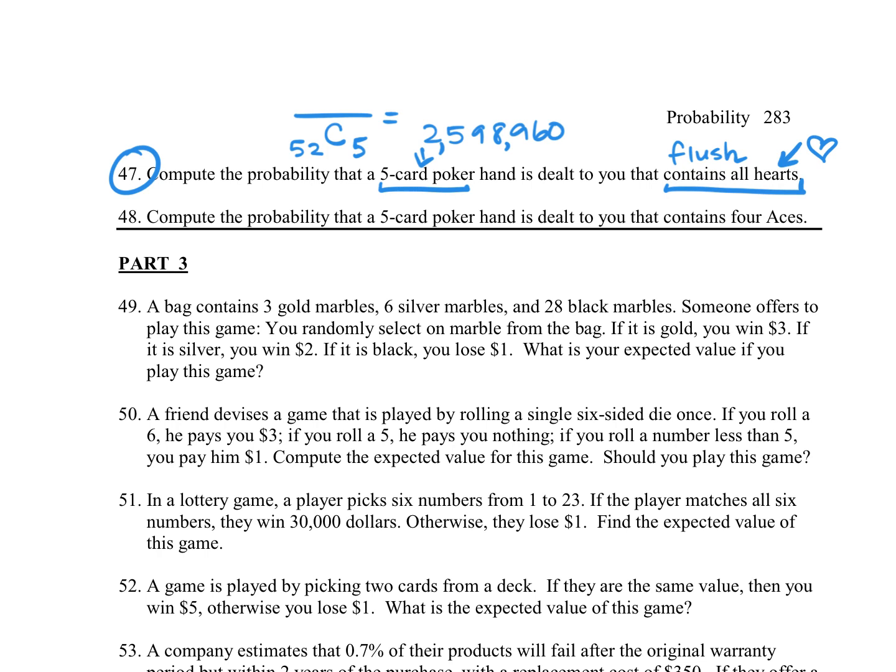And what is it that we want? We want to get all hearts. Well, there's 13 cards that are hearts, and we want to make sure we're choosing five of those. And so that ends up that there's 1,287 ways for that to happen. And that's our probability.